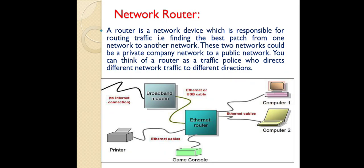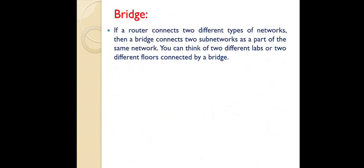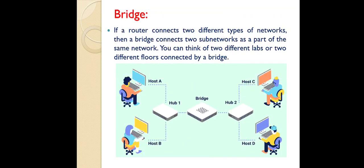The next device is the bridge. If a router connects two different types of networks, a bridge connects two sub-networks as part of the same network. For example, in a company, one lab is on the first floor and another is on the third floor — these two sub-networks are connected with each other using a bridge. So a bridge is defined as the connecting device between two sub-networks within a particular network.